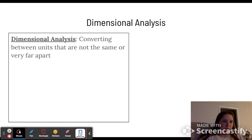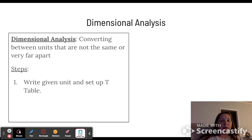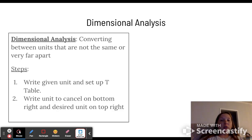Your steps are: write your given unit and set up a T table, which I'll show you when we work out the next example. Write the unit you want to cancel on the bottom right and the desired unit on the top right. Whichever one is your bigger unit gets the number one.